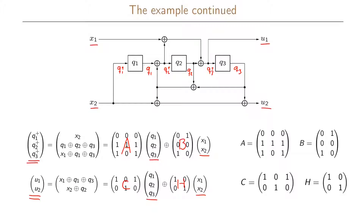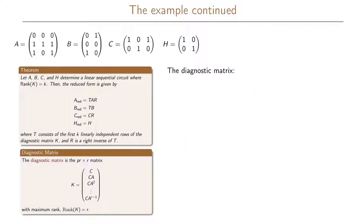What we want to do now is find the reduced form of these four matrices. The reduced form is given by: A reduced = T × A × R, B reduced = T × B, C reduced = C × R, and H reduced = H. The matrix T consists of the first K linearly independent rows of the diagnostic matrix K, and R is the right inverse of T.